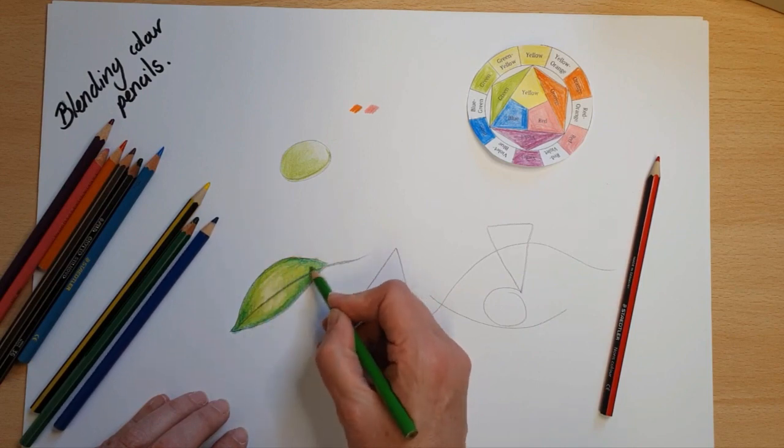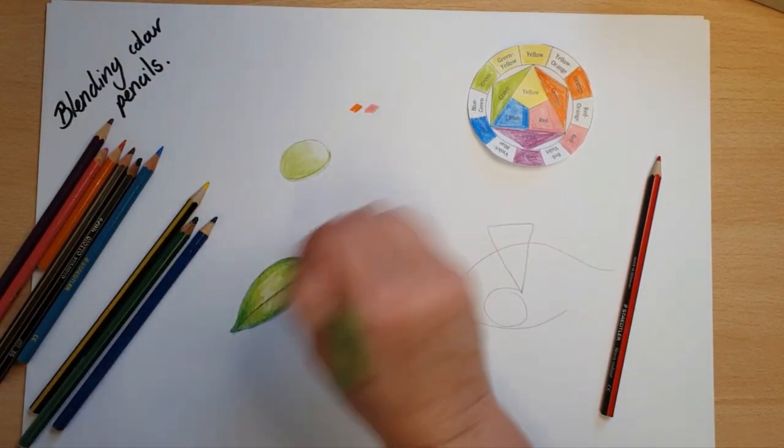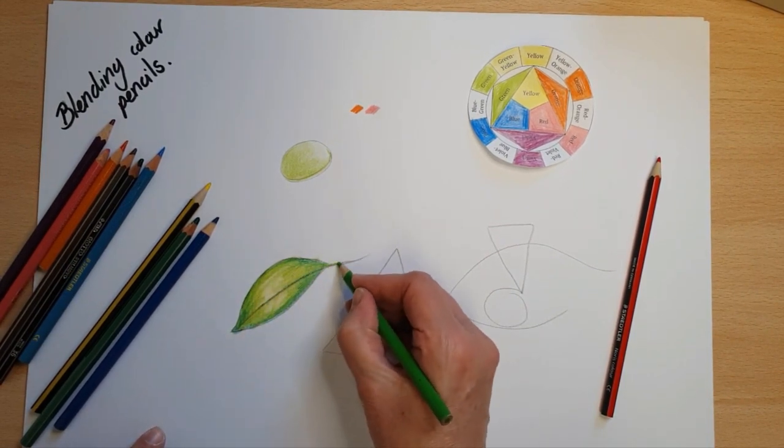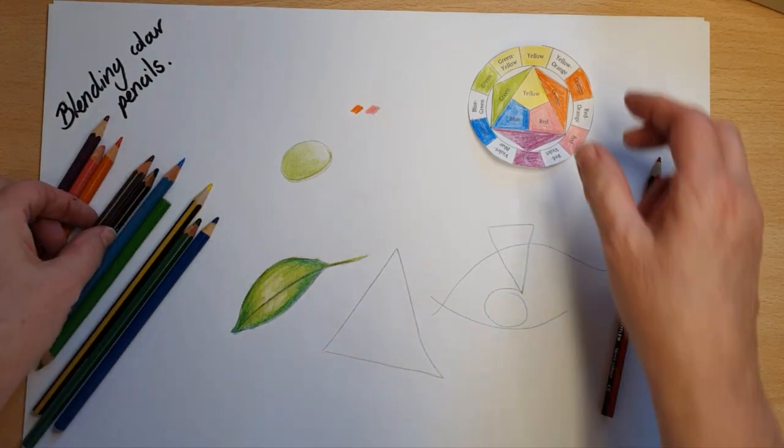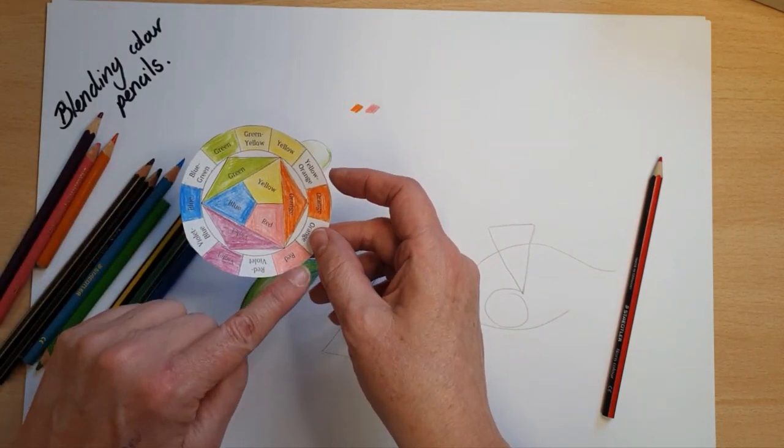I think when we first start using crayons we think the whole area has to be green and we scribble and we scribble and we scribble and we press down as hard as we can. There we go.